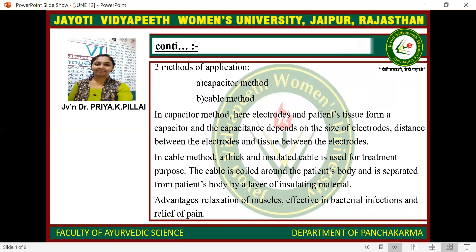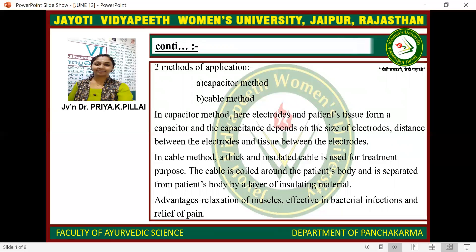Two methods of application: the capacitor method and the cable method. In the capacitor method, the electrodes and patient's tissue form a capacitor, and capacitance depends on the size of the electrode, distance between the electrodes, and tissue between the electrodes. In the cable method, a thick insulated cable is used for treatment; it is coiled around the patient's body and separated from the body by a layer of insulating material.